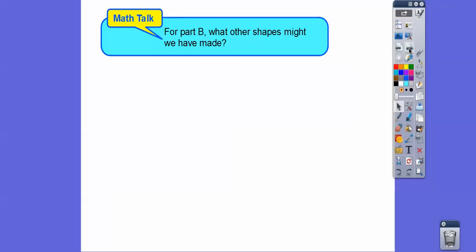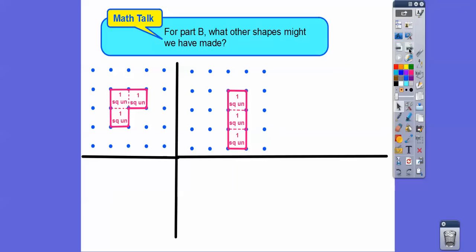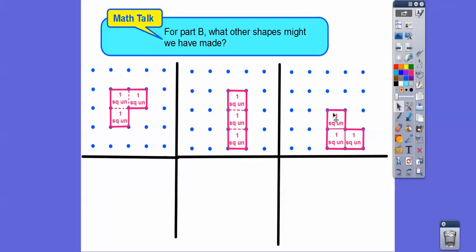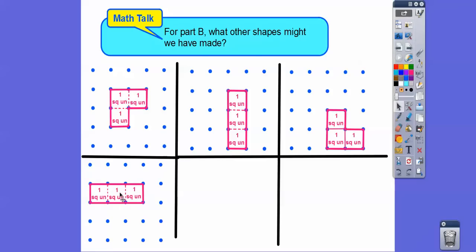From that second part, what other kinds of shapes might we have? Well, here's the one that we have. You could have that shape, or that shape, or that shape. But this shape is essentially this shape just turned upside down — these two are kind of the same shape, even though they're in different positions. So you're either going to have a shape that's three in a row, or a little L shape — or J shape. It's either going to be an L shape or a straight three-square-unit shape.